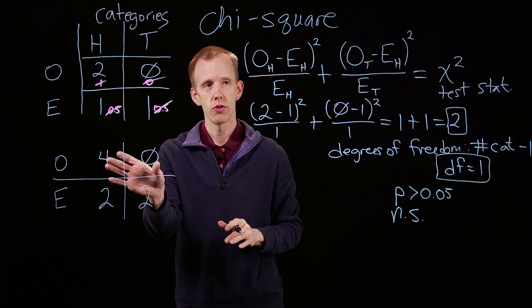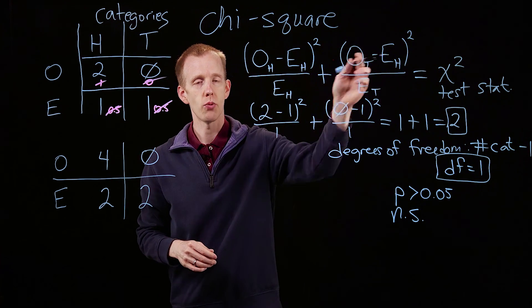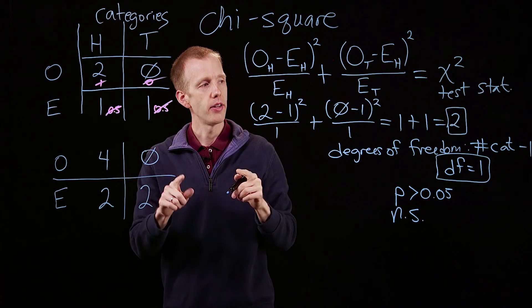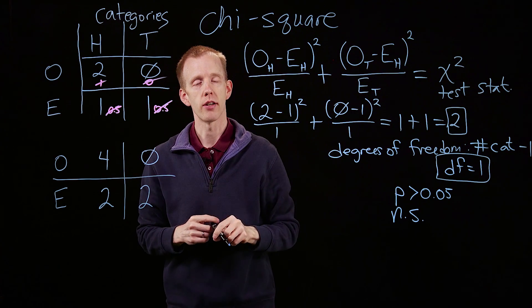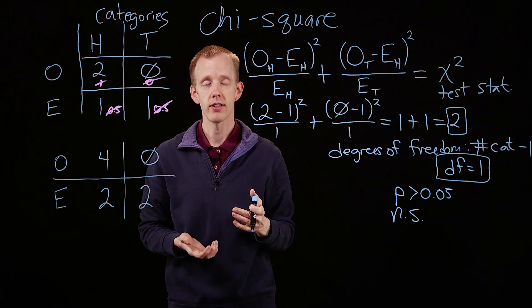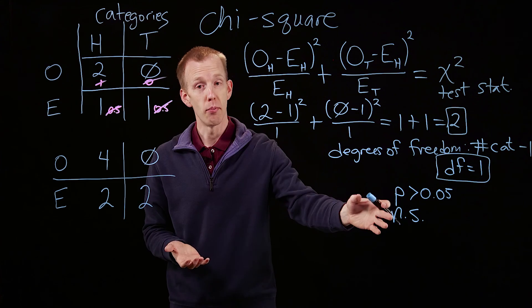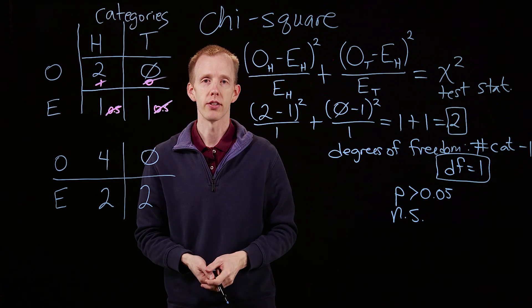So what I'd like you to do is plug those values into the chi-square formula, observed and expected, two different categories, and then tell me what the chi-square test statistic value is. And when we're in class together next time, we'll interpret that chi-square value, the p-value, and discuss what it tells us.